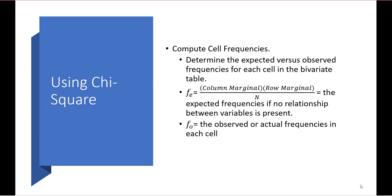To compute our chi-square, we first need to compute our cell frequencies. We need to determine the expected versus observed frequencies for each cell in the bivariate table. To compute our expected frequencies, we take the column marginal total, multiply it by the row marginal total, and divide by n for each cell. This gives us the expected frequencies if no relationship between the variables is present.